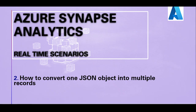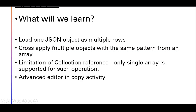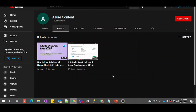In this video, we are going to learn how to load one JSON object and convert it into multiple rows and store it in a SQL table. We'll also see what is happening behind the scenes — Azure performs a cross-apply of multiple objects with the same pattern from a selected array. We'll cover the limitation of collection reference, specifically that only a single array is supported, and the use of the advanced editor in copy activity.